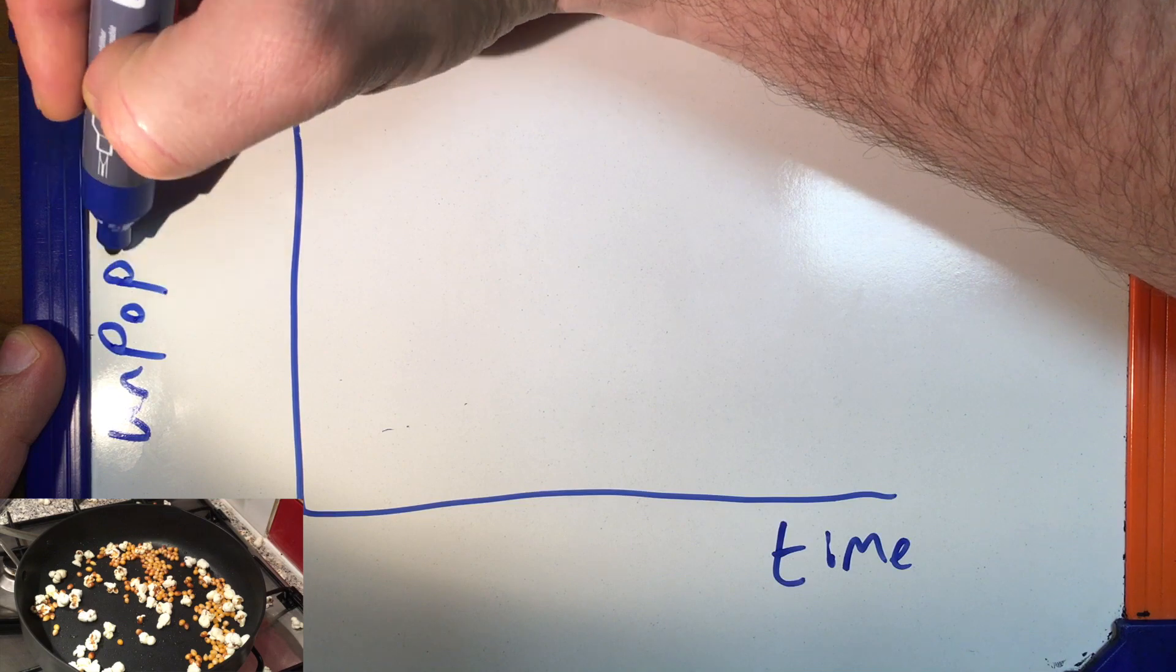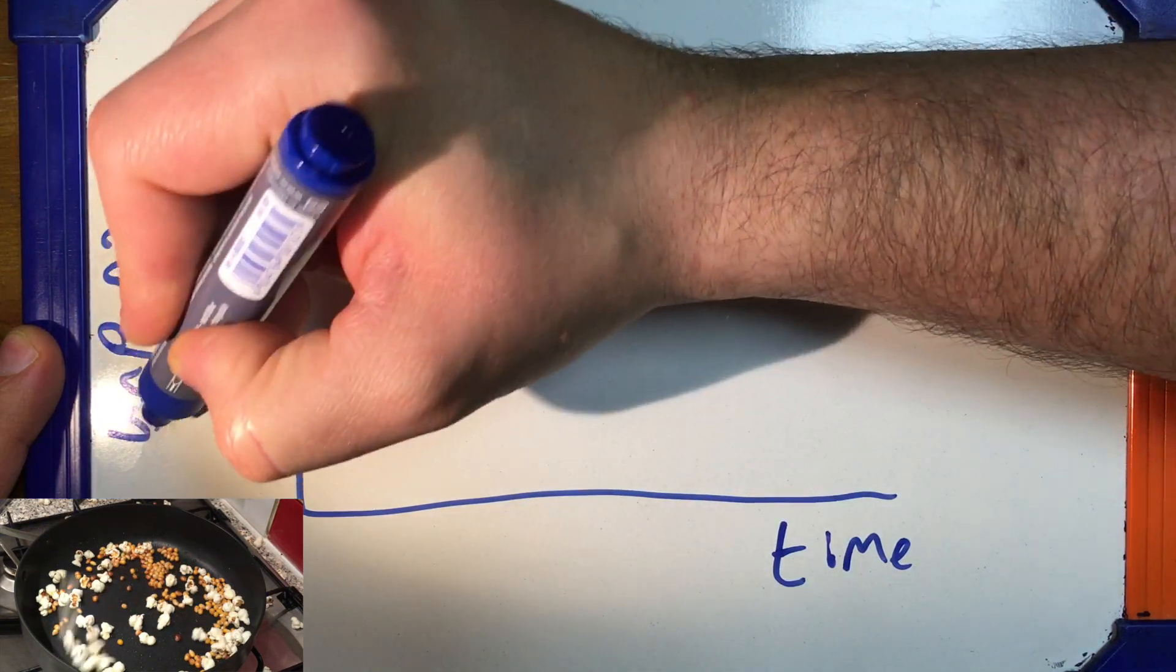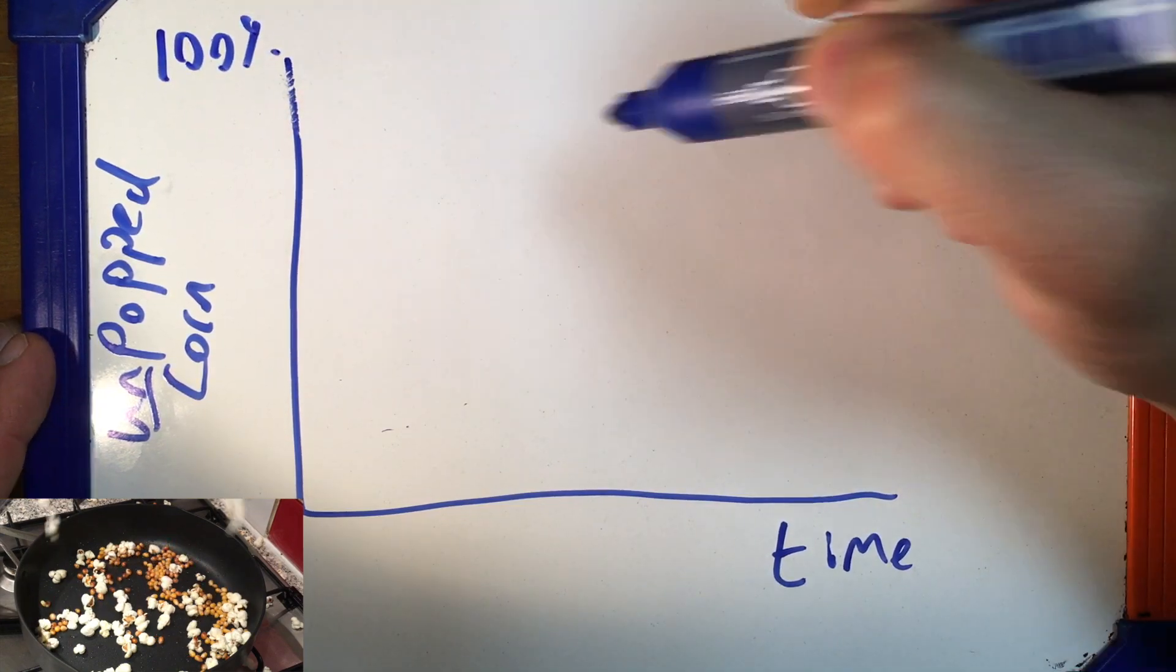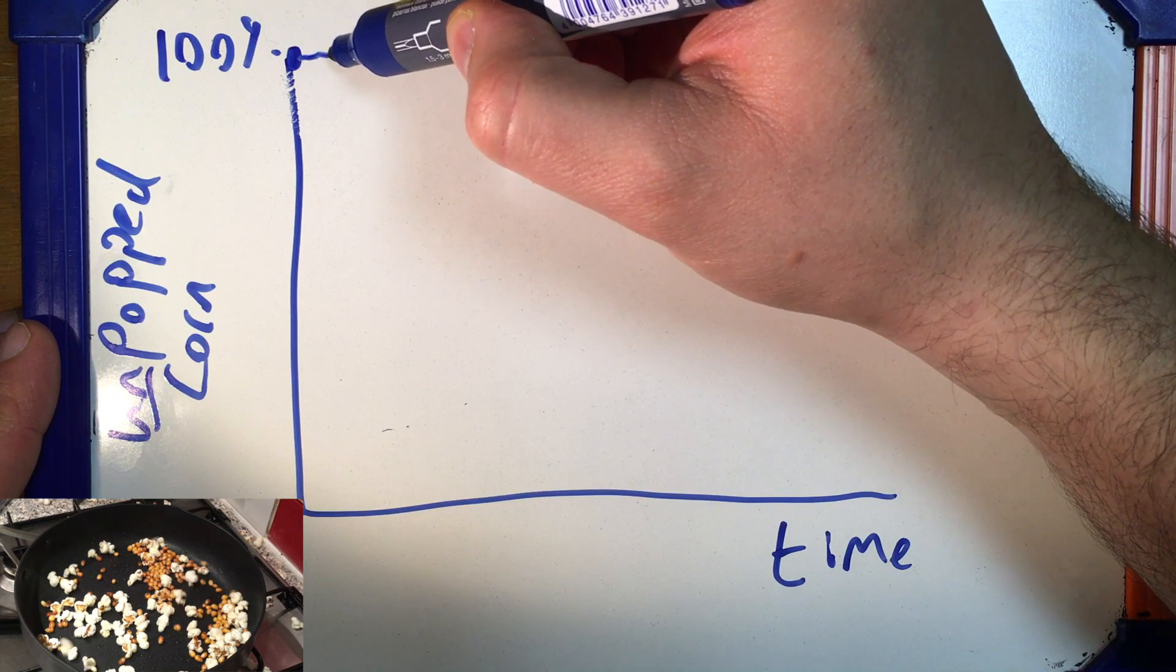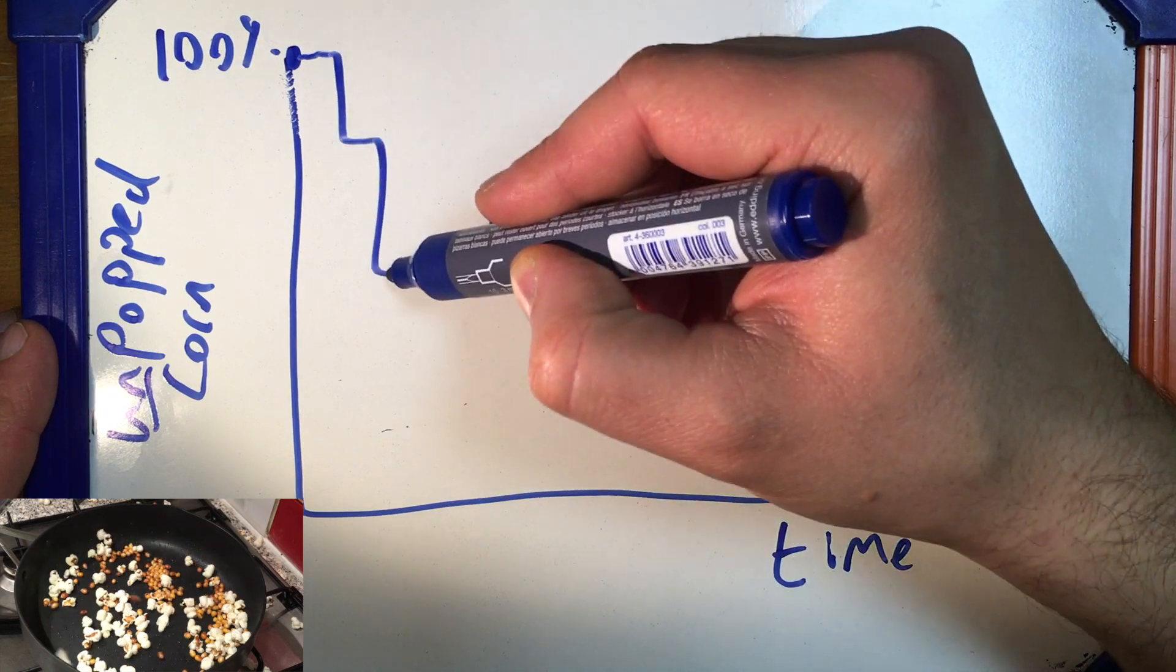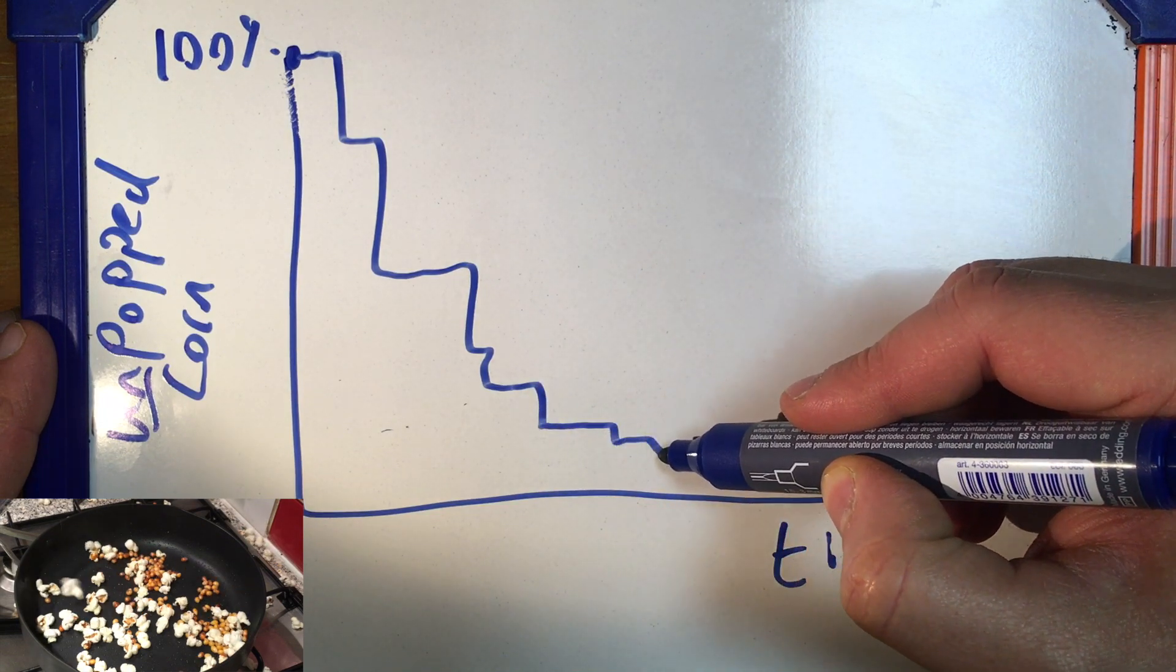It's kind of like making popcorn. You know the popcorn is going to pop, but we can't predict which one is going to pop next. If we put making popcorn on a graph, then at the start, we have 100% unpopped corn. And some will pop. Some will pop more than others. Some won't pop at all.